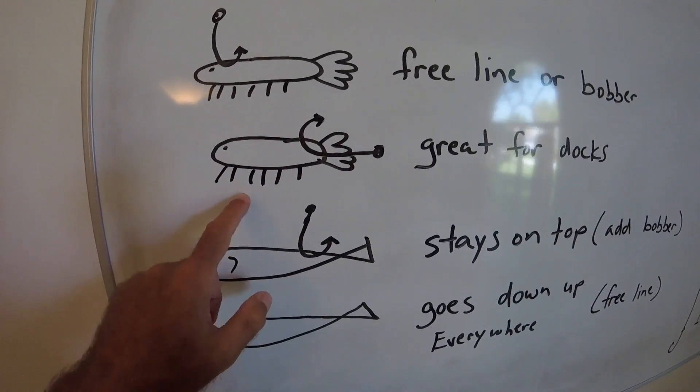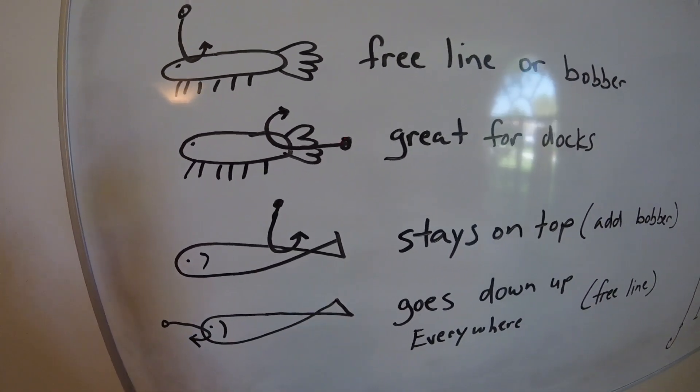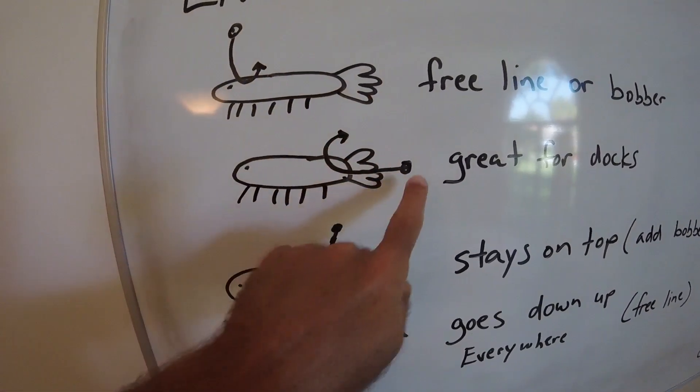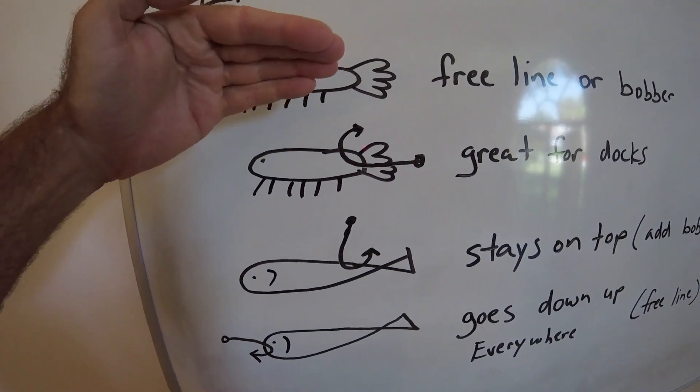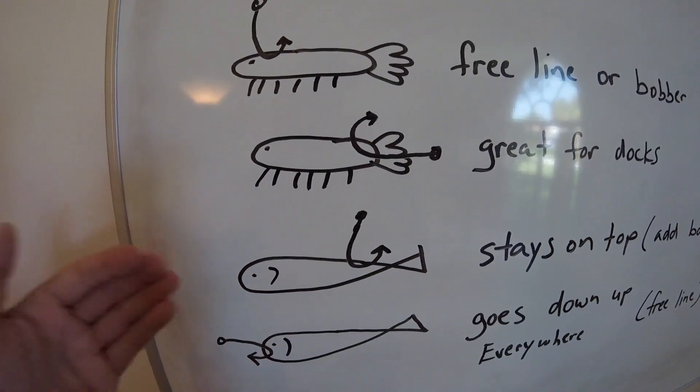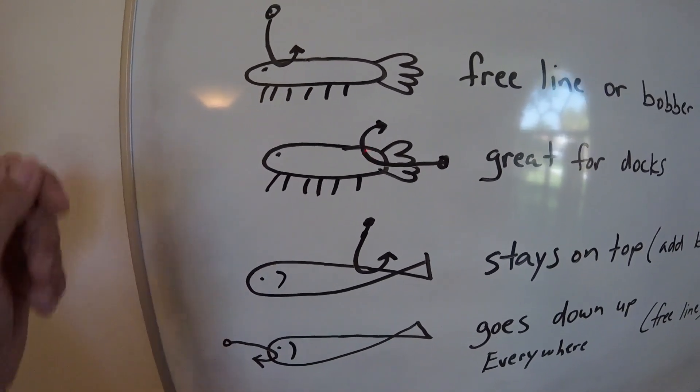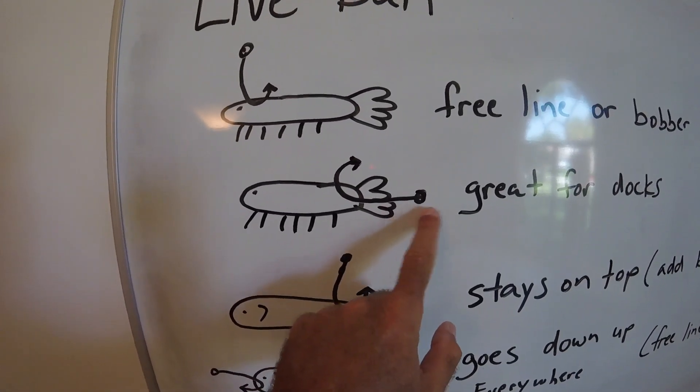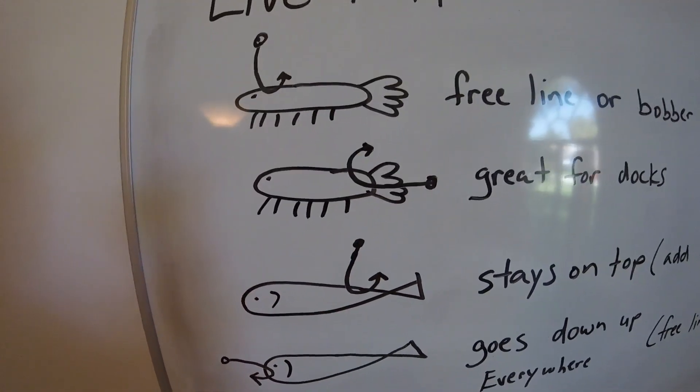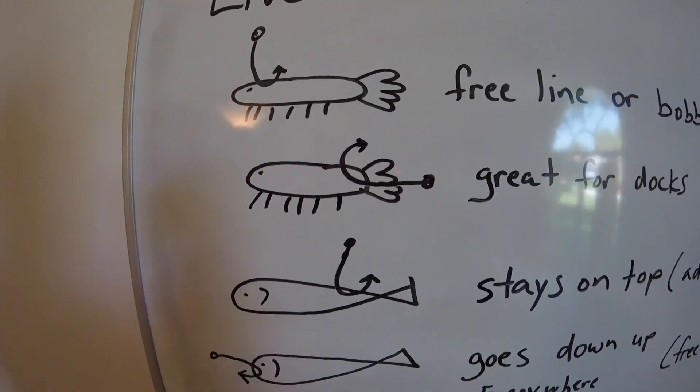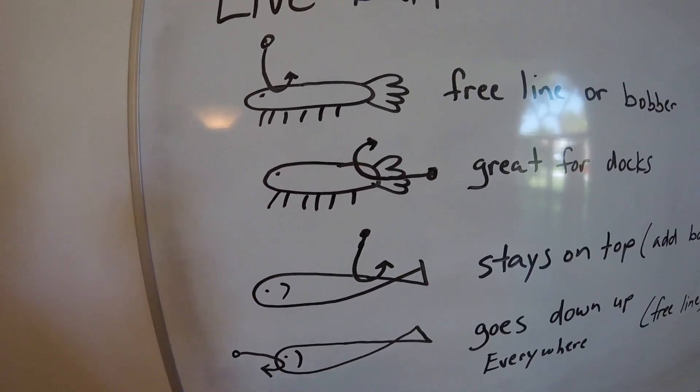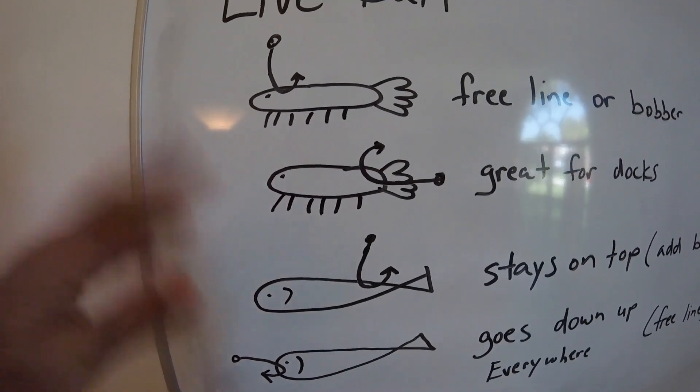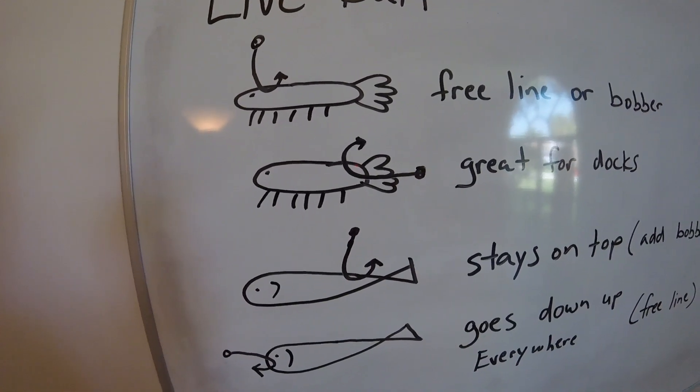If you're fishing a shrimp and want to pitch it to docks, oyster bars, or mangroves, hook it coming up from the belly so the hook's on top. It's not all the way weedless but much more weedless this way. Just pitch it to wherever you're looking. A lot of people fish this with a jig head and bounce it along the bottom, just like you would with paddle tails or other lures. This is great for catching all kinds of fish—everything eats shrimp.